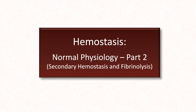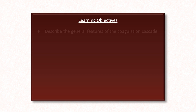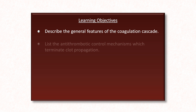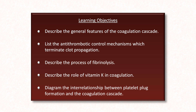This is the third video in this series on hemostasis, and is part 2 of the discussion of normal physiology, specifically covering the topics of secondary hemostasis and fibrinolysis. The learning objectives of this video are: first, to describe the general features of the coagulation cascade; second, to list the antithrombotic control mechanisms which terminate clot propagation; next, to describe the process of fibrinolysis; then to describe the role of vitamin K in coagulation; and last, to diagram the interrelationship between platelet plug formation and the coagulation cascade.